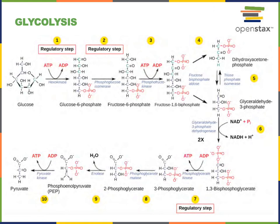The eighth step of glycolysis converts 3-phosphoglycerate to 2-phosphoglycerate. This is an isomerization reaction catalyzed by phosphoglycerate mutase.